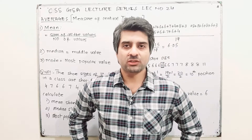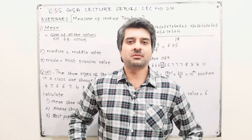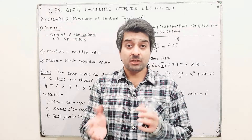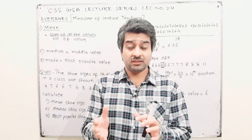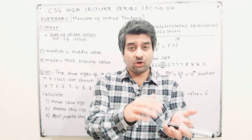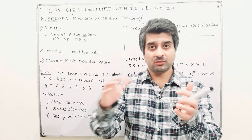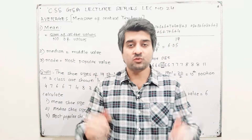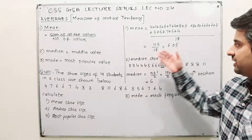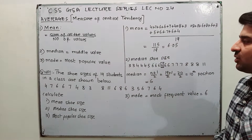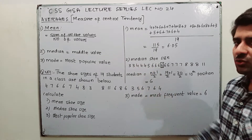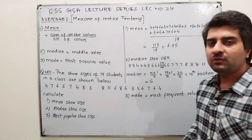There will not be any shoe having a size of 6.05, but this value tells you that your data — your shoe sizes — are spread around this value, either below or above it. So this is an approximation about the shoe size. For median, we need the middle value.